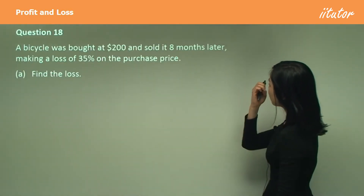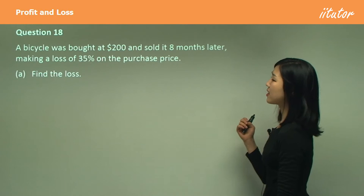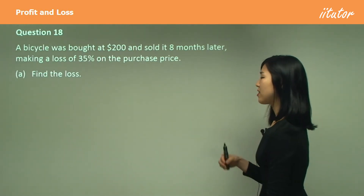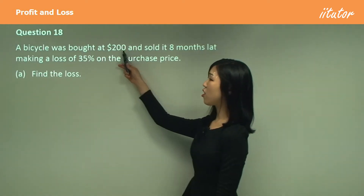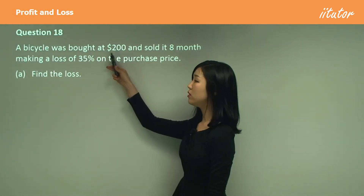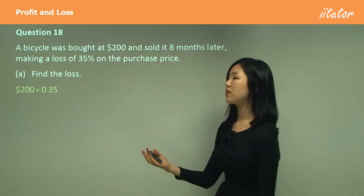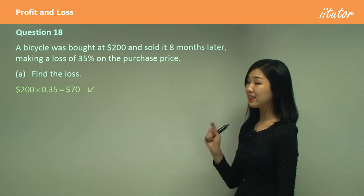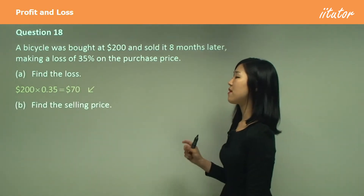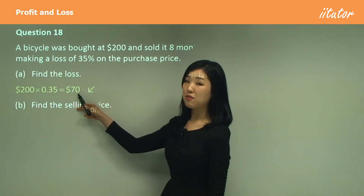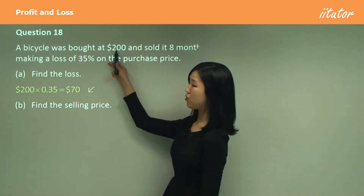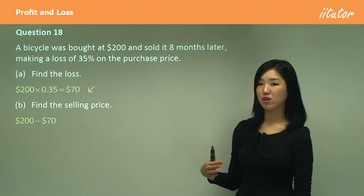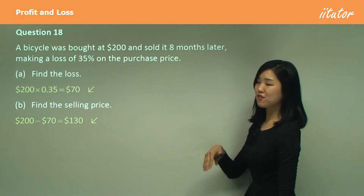A bicycle was bought at $200 and sold eight months later making a loss of 35% on the purchase price. Find the loss. This person made a loss of 35% of $200, so we multiply to get $70 — that's the loss. Now for part B, we want to find the selling price. If we made a loss of $70 and bought it for $200, the selling price is $200 minus $70, which gives $130.